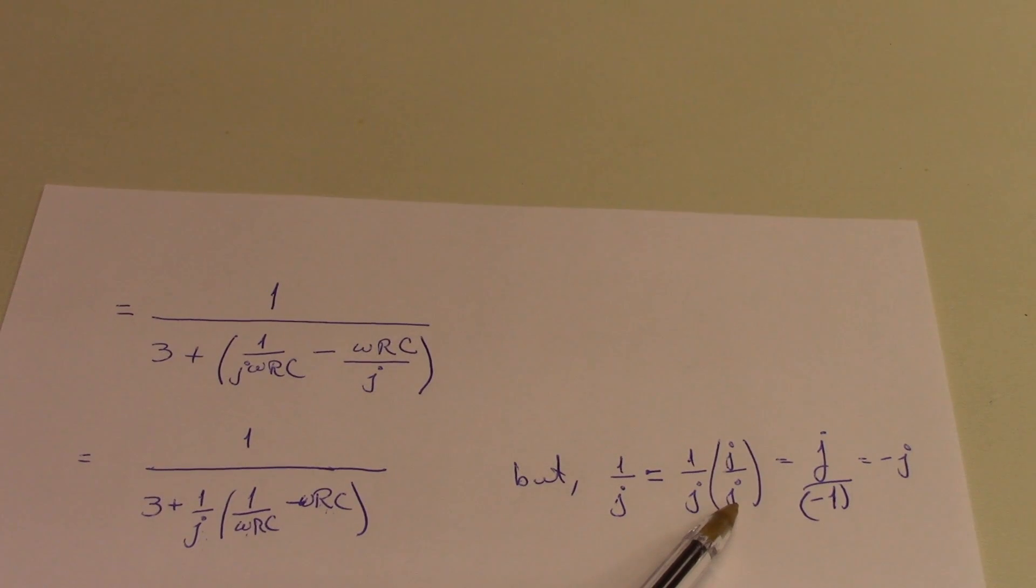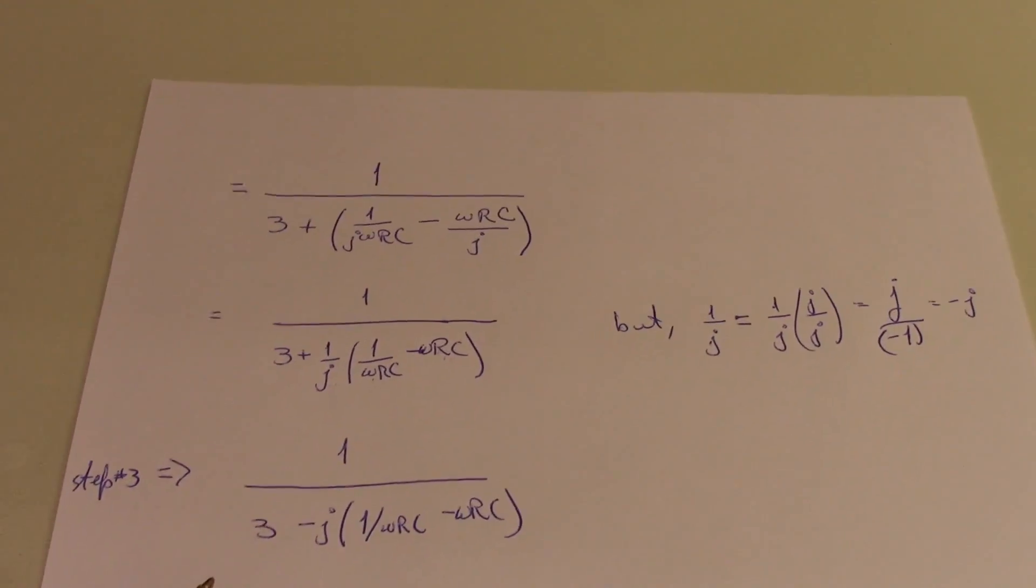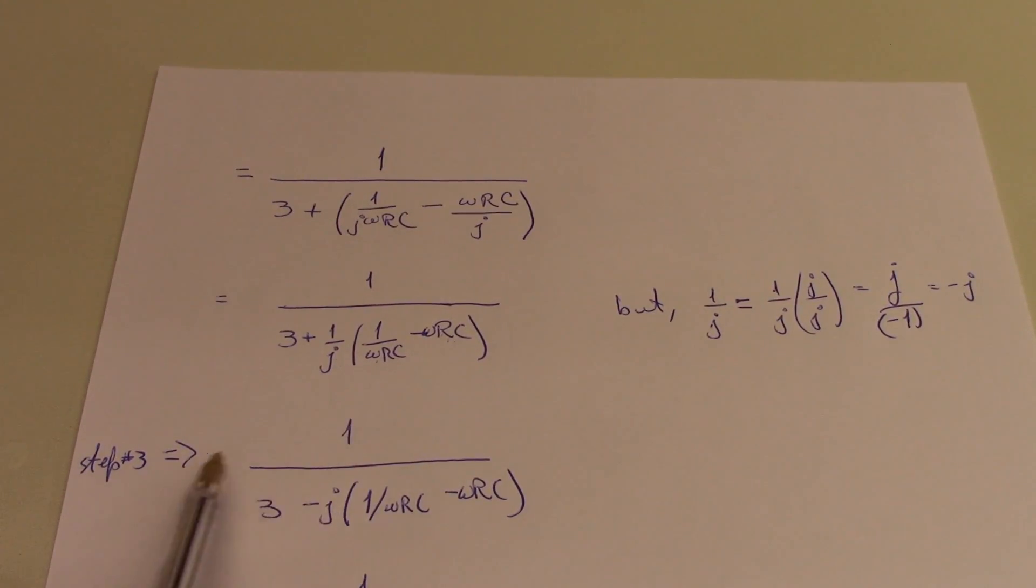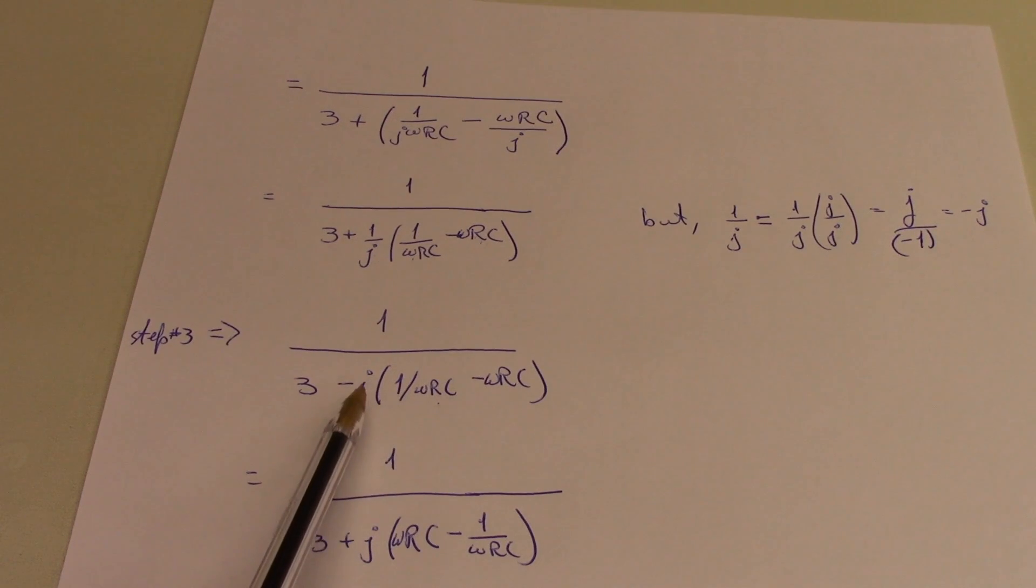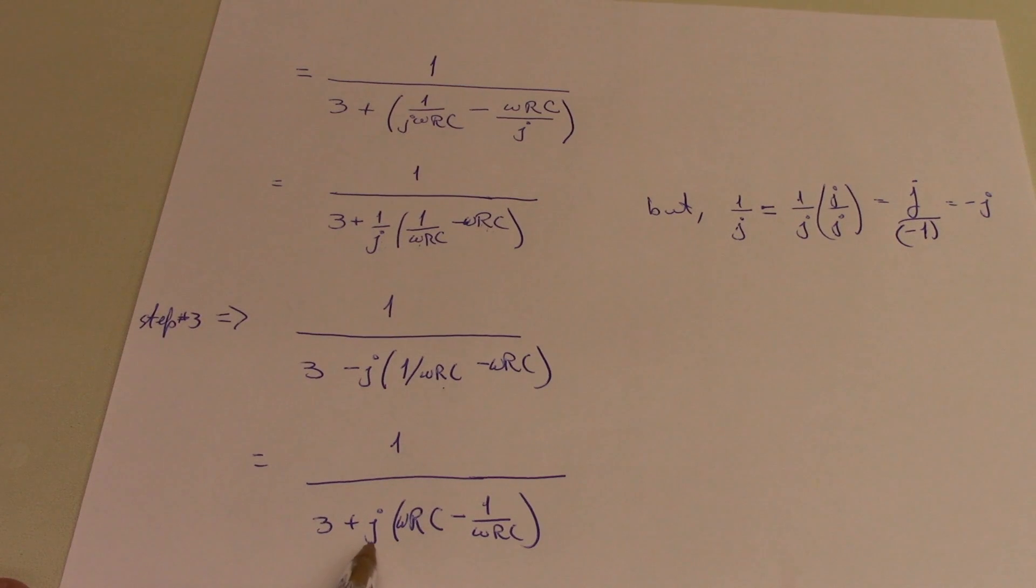1 over j is equal to 1 over j times j over j. 1 times j is just j, and j times j, or j squared, is minus 1, which is minus j. So I'm left with 1 over 3 minus j times 1 over rc minus omega rc. And then bringing that minus sign through, I get 1 over 3 plus j times omega rc minus 1 over omega rc.